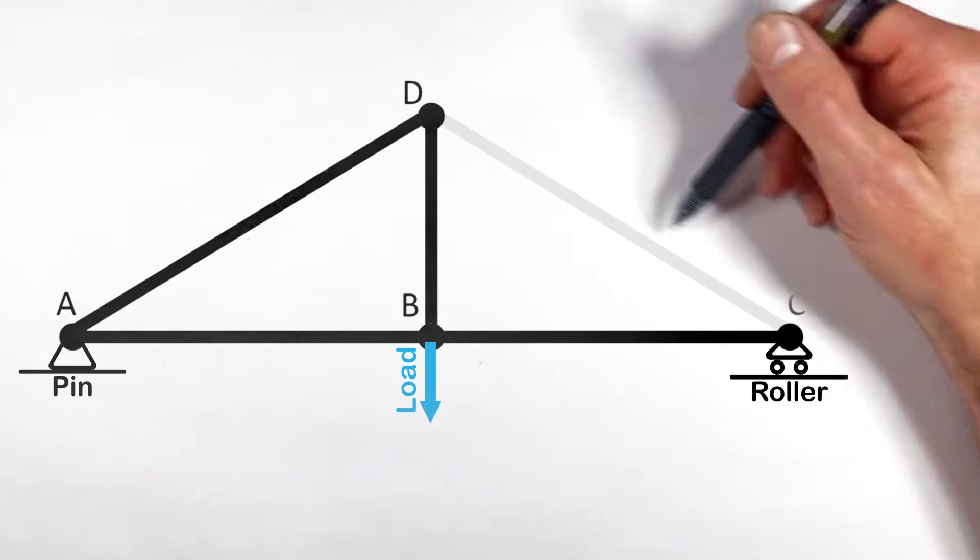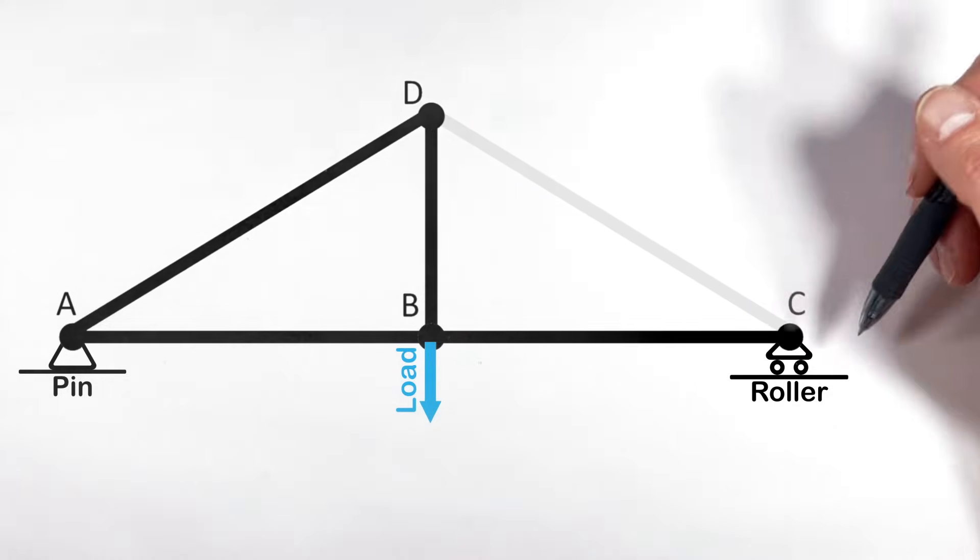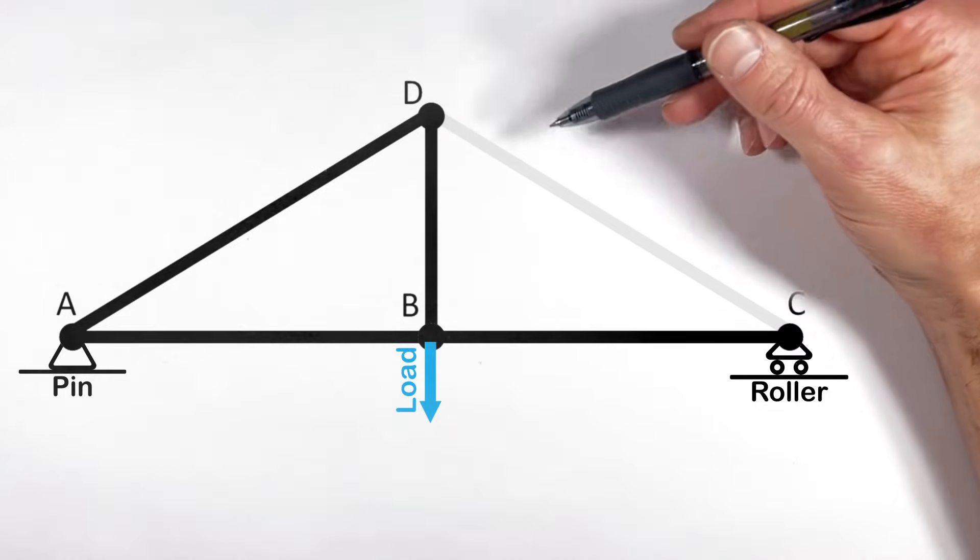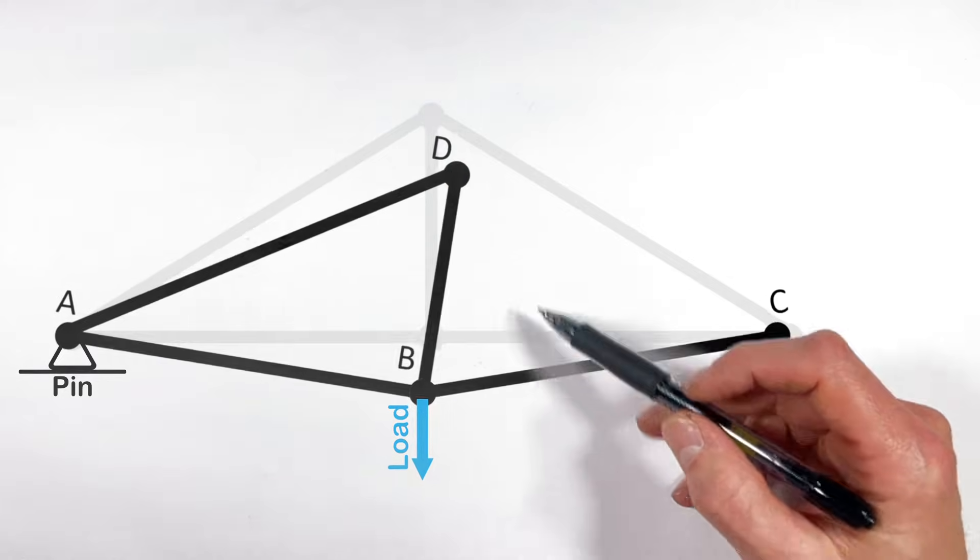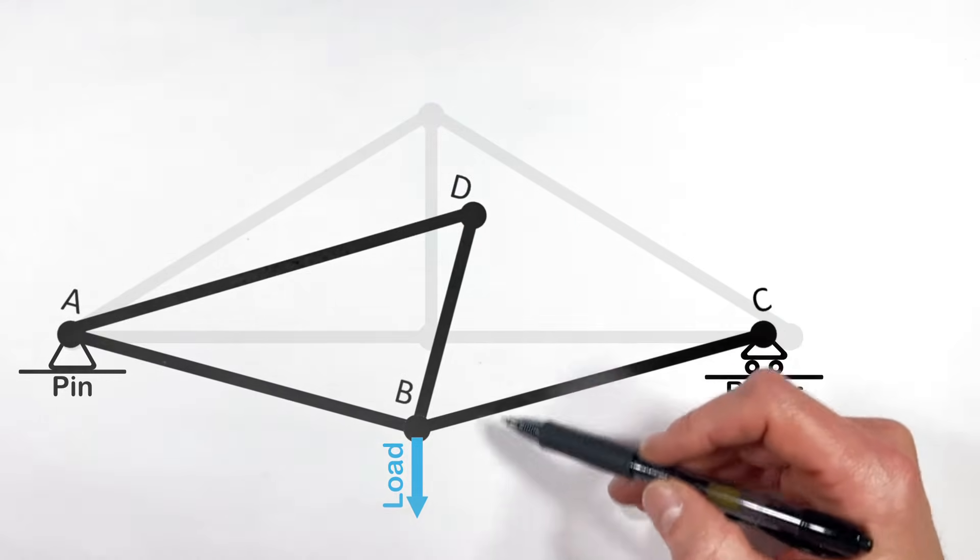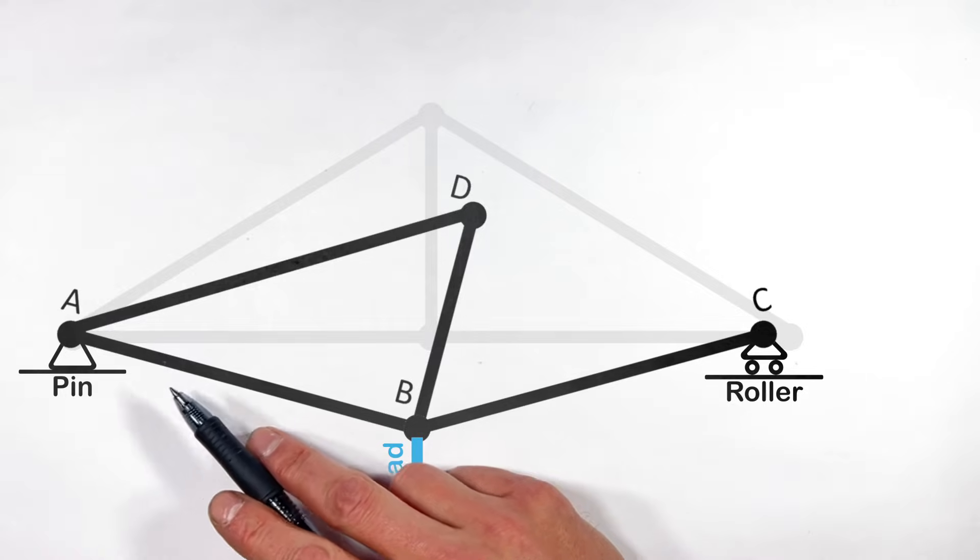So let's say we took out or removed this member right here that runs from joint C to D. If we were to pull that out of there, the load on this truss would pull the entire left half of this truss downward rotating around that pin right there.